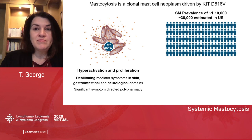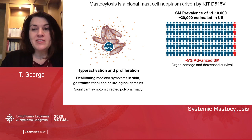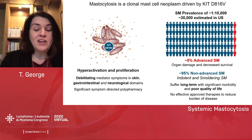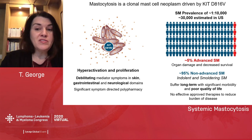This is the estimated prevalence of systemic mastocytosis in the United States. Only about 5% of patients with systemic mastocytosis have advanced disease, where these patients have organ damage and decreased survival. More than 95% have non-advanced systemic mastocytosis, but they still suffer long-term with significant morbidity and poor quality of life, and there have been no effective approved therapies to reduce the burden of disease in these non-advanced patients.